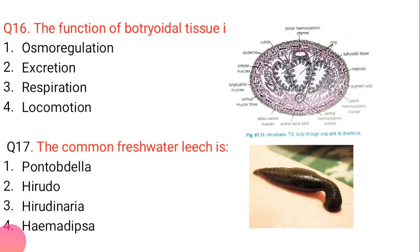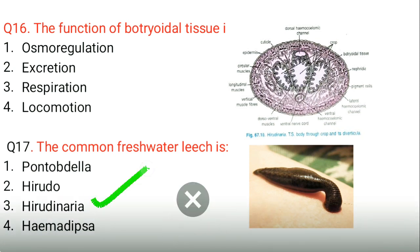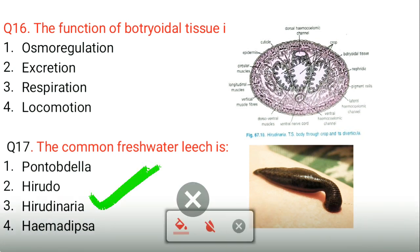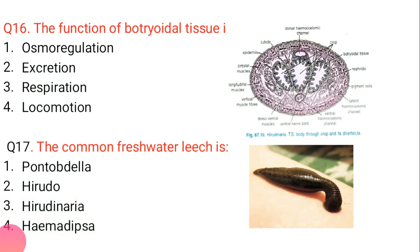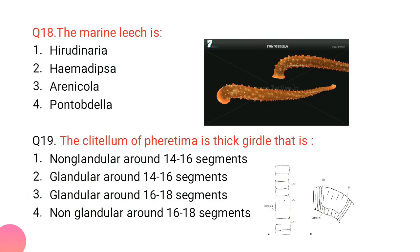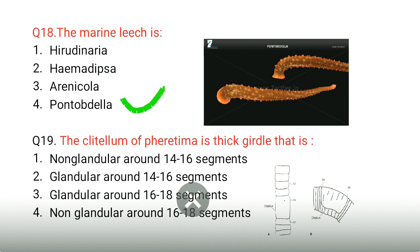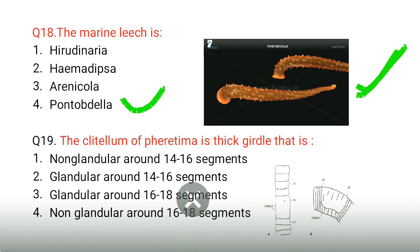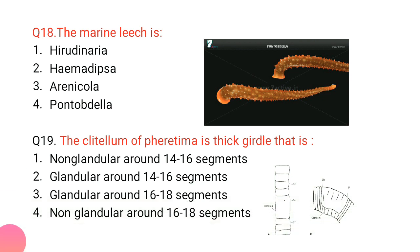The common freshwater leech belongs to class Hirudinea — that is Hirudinaria. The marine leech is Pontobdella, which also resembles Hirudinea. You can see the diagram clearly.